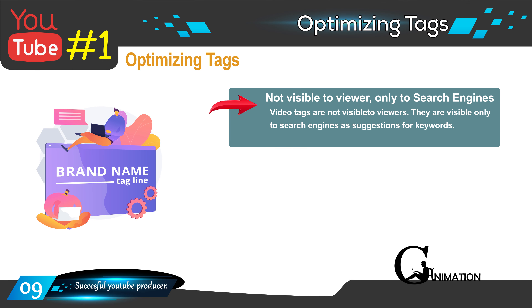Tags are the keywords which you want to be found for. Through tags, you tell YouTube that they should be returning your videos when viewers type in those keywords in the search bar. But tags are only for YouTube and the search engines — they are not visible to the viewer. Only search engines like Google or Bing, or YouTube itself, can see the tags.